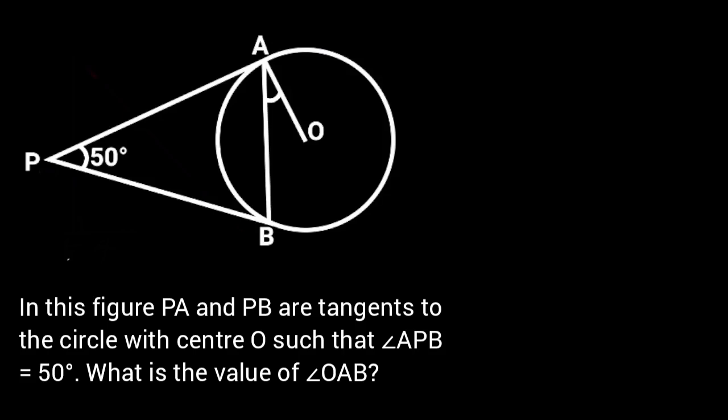In this figure, PA and PB are tangents to the circle with center O, such that angle APB is equal to 50 degrees. What is the value of angle OAB?